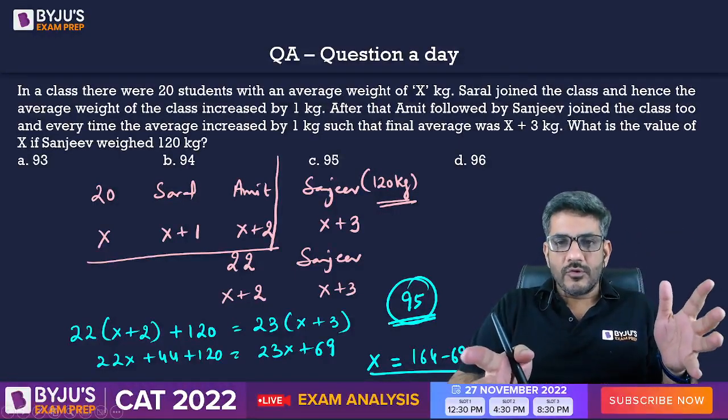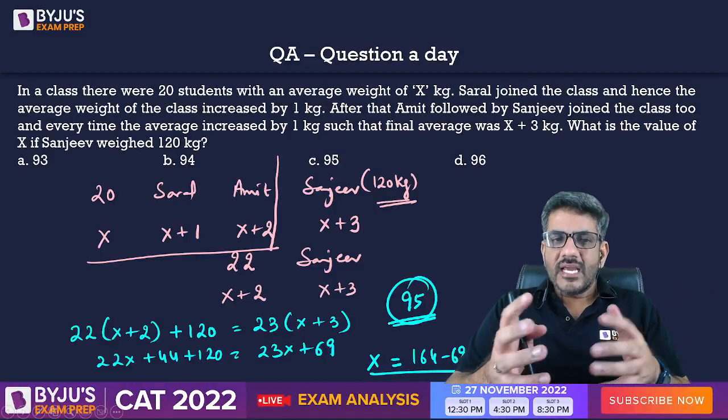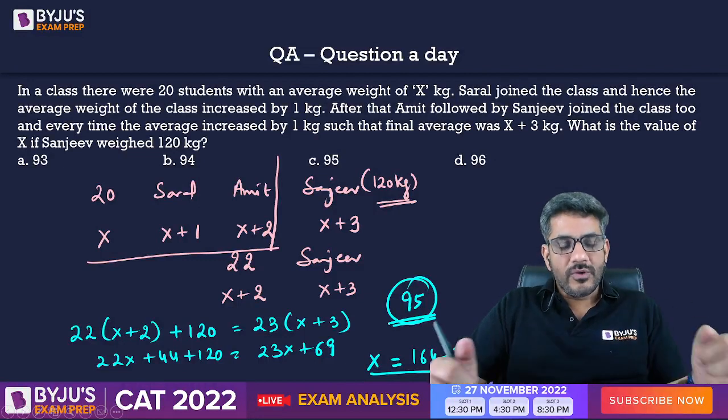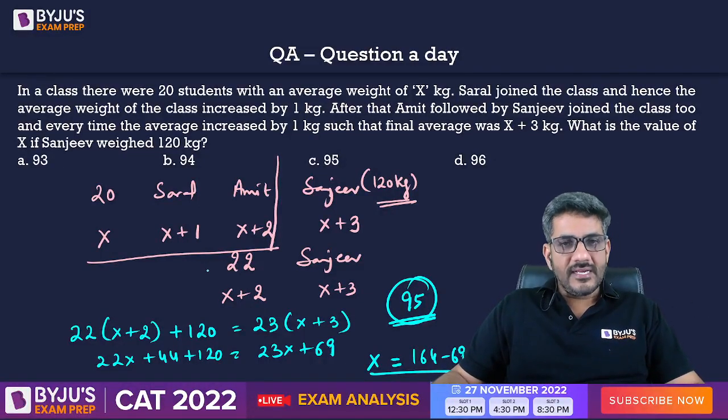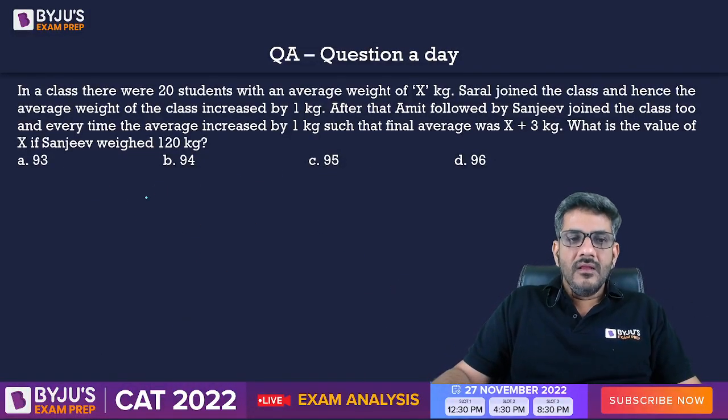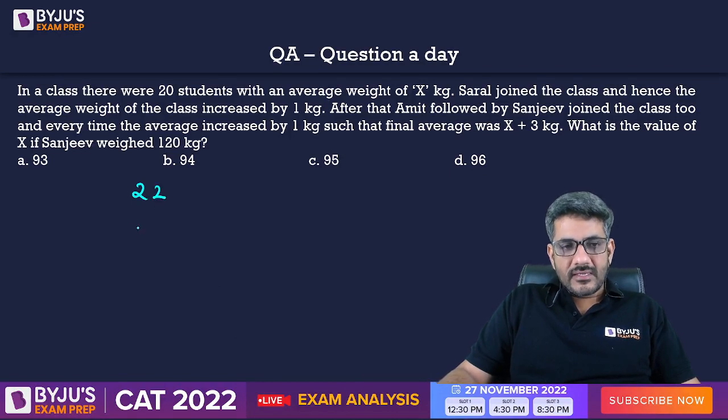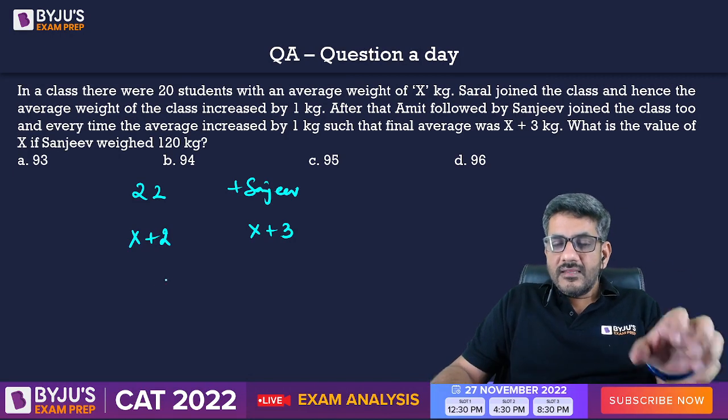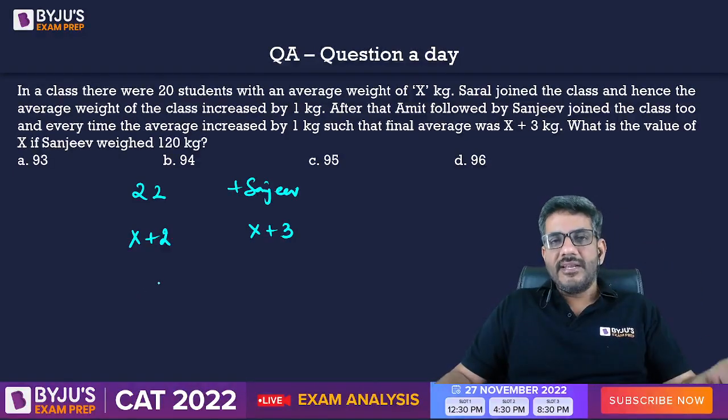Now, this is one way of doing the question once again. What can be the other way of doing this? Is there any logical method? Yes, we always have that. And that is why I discuss these questions. So, when 22 kids were there, the average weight of the class was x plus 2. Then Sanjeev also comes in and the average weight becomes x plus 3. And this x plus 3 is the weight of all 23 people.